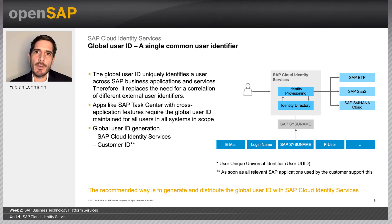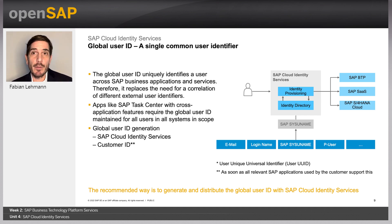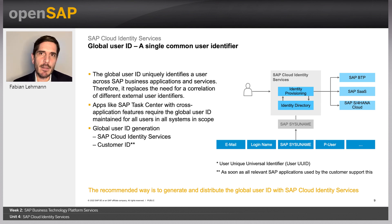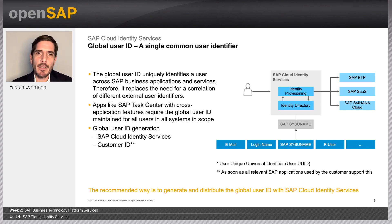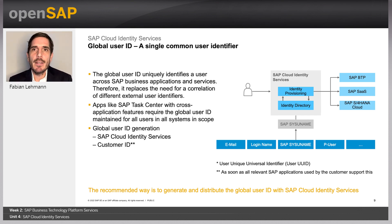One essential part, especially for new developments like SAP Task Center or SAP Start, is the new single common user identifier — the so-called global user ID — which is stored in SAP Cloud Identity Services. For SAP Task Center, to identify whether a user has a task in a connected system like FieldGlass, we need one key value to identify the user. For this, the user UUID is used.